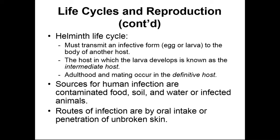Helminths need to be transmitted in an egg or larval form to the body of a host. The larva develops in an intermediate host, which is typically used for transmission, and once that larva gets into the final or definitive host, it will form the adult stage and go through reproduction. In human beings, parasitic helminths can get into our bodies from contaminated food, soil, water, or infected animals. A personal example — my wife is pregnant right now, so we're staying away from cat litter boxes so she doesn't get toxoplasmosis. Infection can enter by oral intake or by penetrating unbroken skin, though oral intake is much more common.